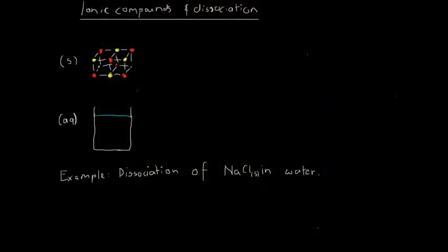We're going to talk a little bit about ionic compounds and dissociation. If you have a look at this diagram that I've drawn here, this diagram represents an ionic compound when it's in solid form. This compound is in a lattice shape — a regular, three-dimensional grid. We call this kind of regular pattern of different ions a lattice.